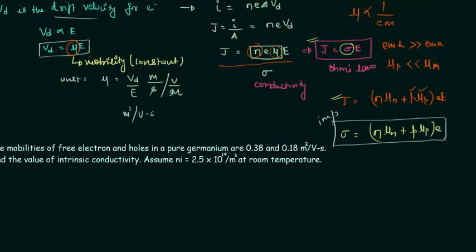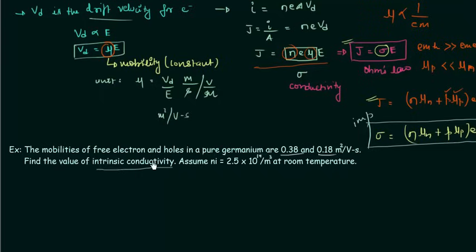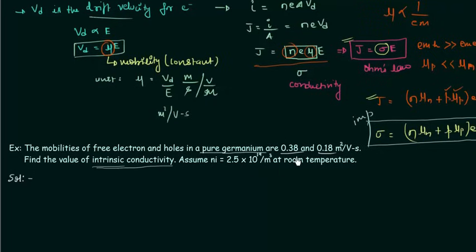Now let's move to a numerical problem. The mobilities of free electrons and holes in pure germanium are 0.38 and 0.18 meter squared per volt-second respectively. Find the value of intrinsic conductivity, given that Ni equals 2.5 into 10 to the power 19 per meter cube at room temperature. The conductivity is intrinsic because it is pure germanium — an intrinsic semiconductor with no impurity. So Mu-n is 0.38 and Mu-p is 0.18 meter squared per volt-second.